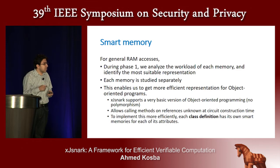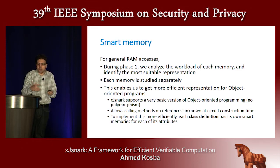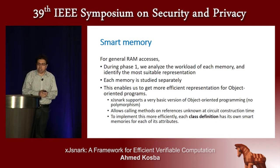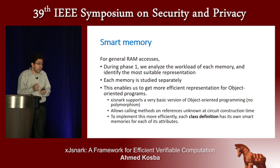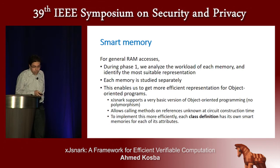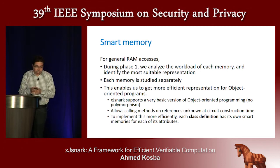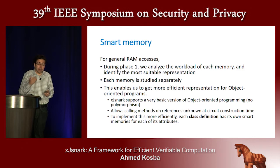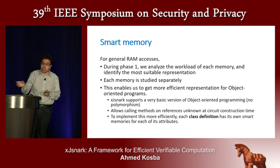XJSNARK provides the ability for programmers to write different class definitions, and the programmer can call methods on references that are unknown during runtime. To implement this efficiently, we found that every class definition needs to have a smart memory structure for each of its attributes.